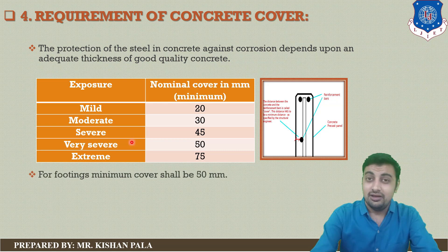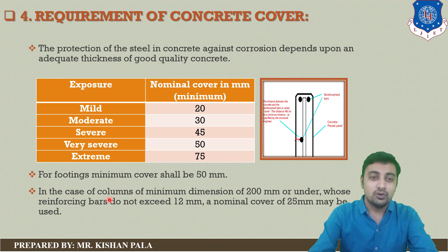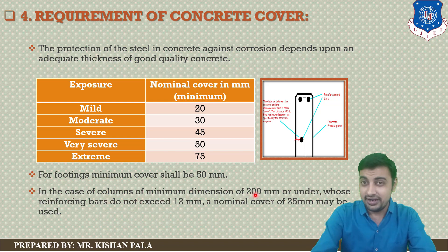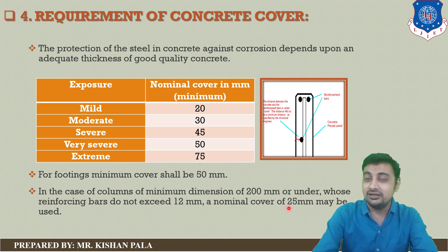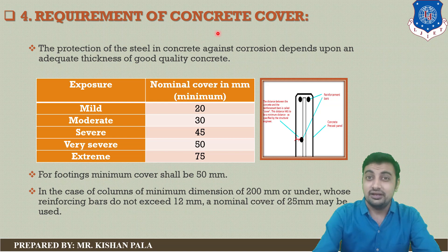For footings, you should provide at least 50 mm cover. In the case of columns with a minimum dimension of 200 mm or whose reinforcement does not exceed 12 mm, a nominal cover of 25 mm should be provided. These are the requirements for concrete cover for durability.